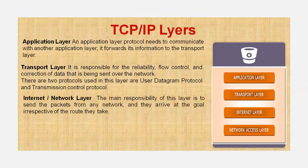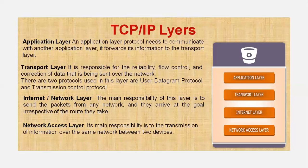The third layer is the internet or network layer. Its main responsibility is to send packets from any network so they arrive at the destination regardless of the route they take. The fourth layer is the network access layer, which is a combination of the physical layer and the data link layer present in the OSI reference model. Its main responsibility is to transmit information over the network between two different devices.